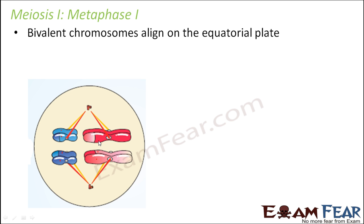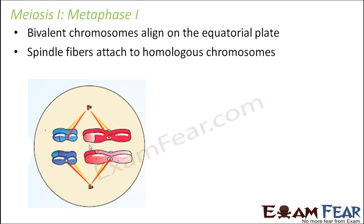The bivalent chromosomes align on the equatorial plate. This alignment is due to the continuous counterbalancing forces exerted on these chromosomes by the microtubules. That is why they get aligned at the equator — this is known as the metaphase plate. Spindle fibers attach to homologous chromosomes. The number of chromosomes here is different from mitosis, but otherwise the concept remains the same.